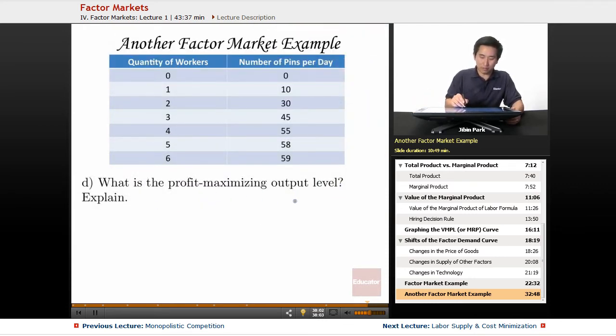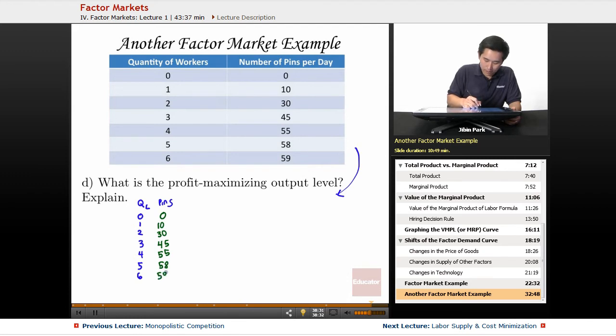What is the profit-maximizing output level? Let's redraw this graph where there's a little bit more space. You have the quantity of workers—0, 1, 2, 3, 4, 5, and 6. This is the number of pins: 0, 10, 30, 45, 55, 58, and 59. You have the MPL—10, 20, 15, 10, 3, and 1. The price—what are you charging for the pins? The price is $20.